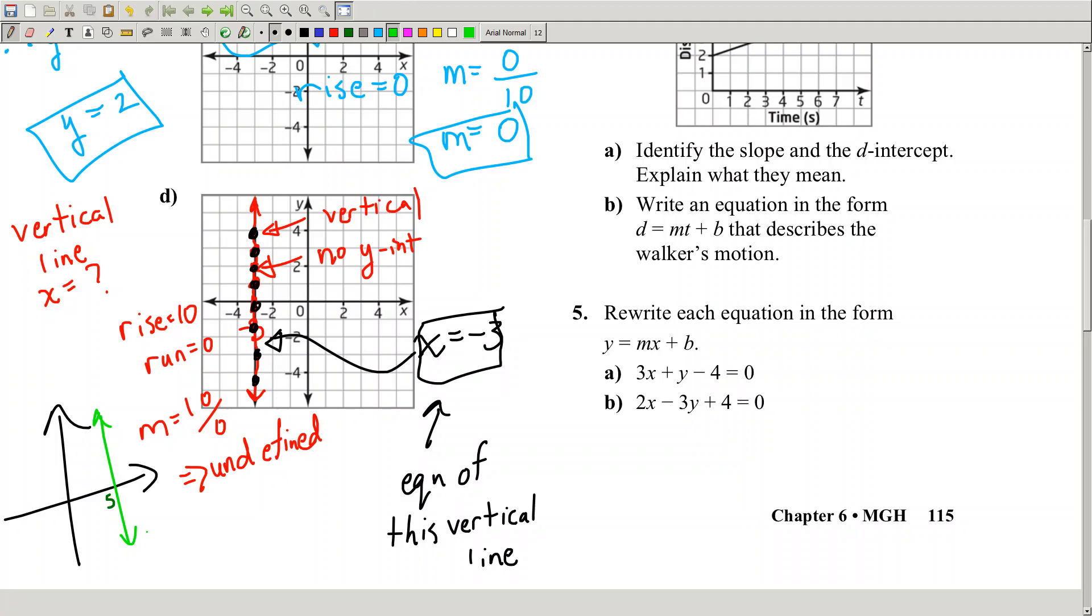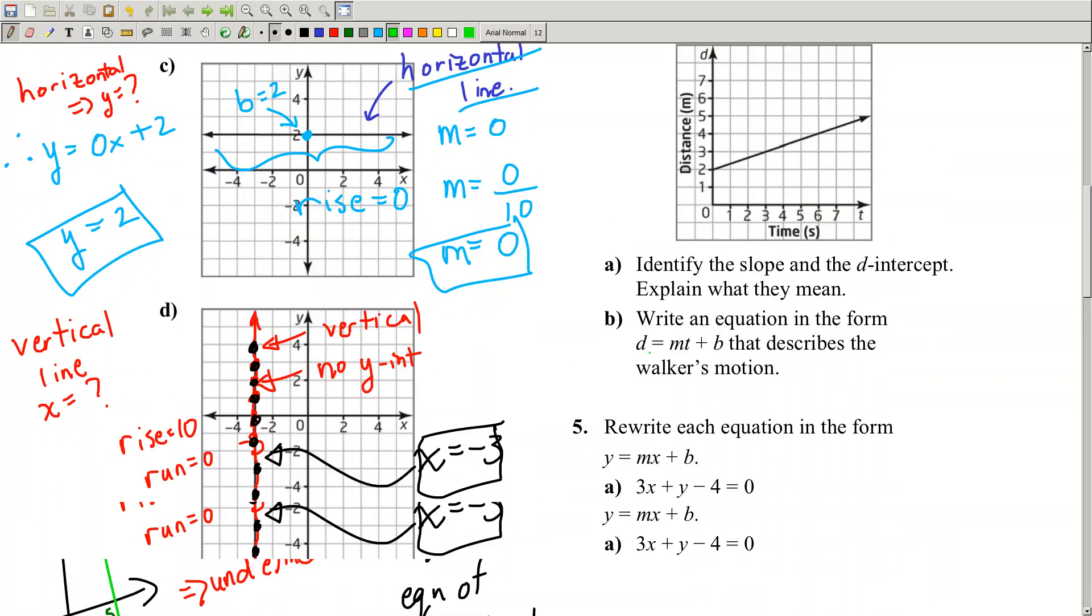Whatever x-intercept it goes through, that's the equation: x equals whatever. For the horizontal line, whatever y-intercept it goes through, that's your equation: y equals whatever.